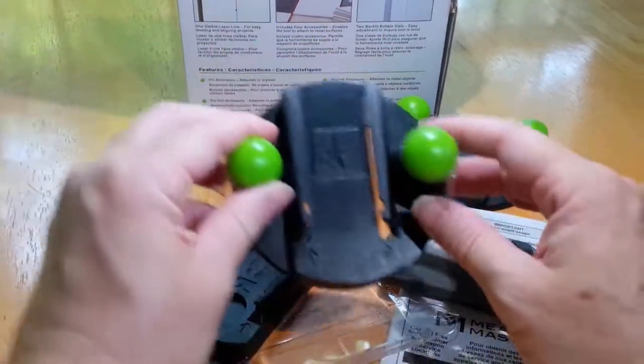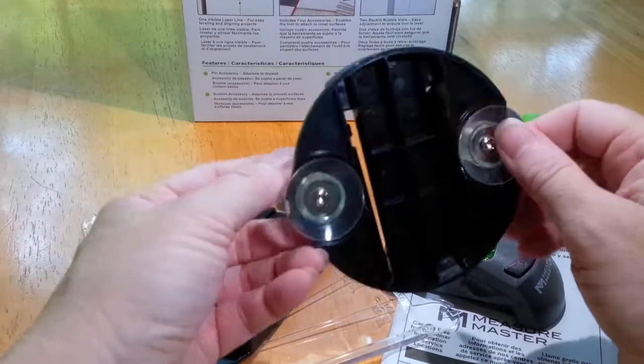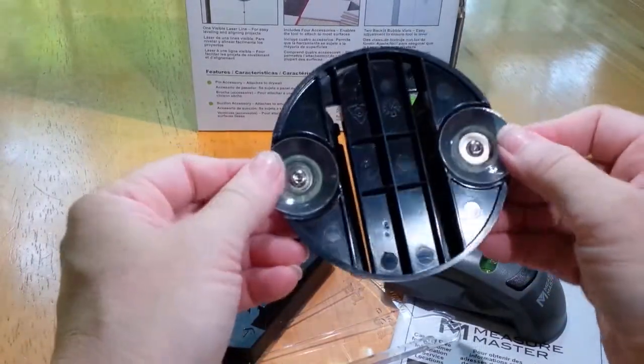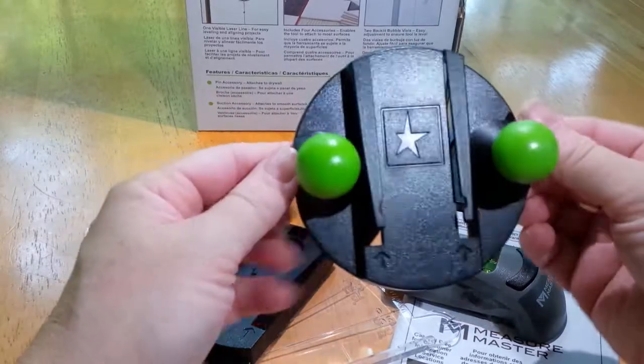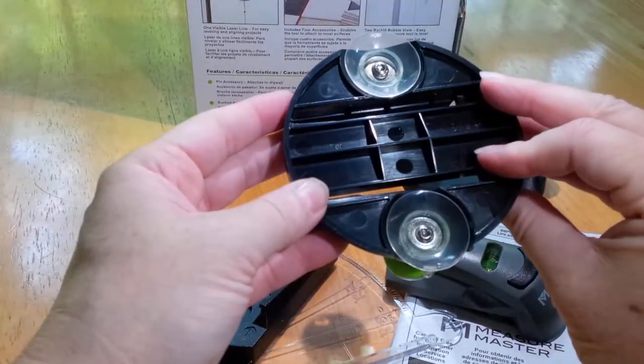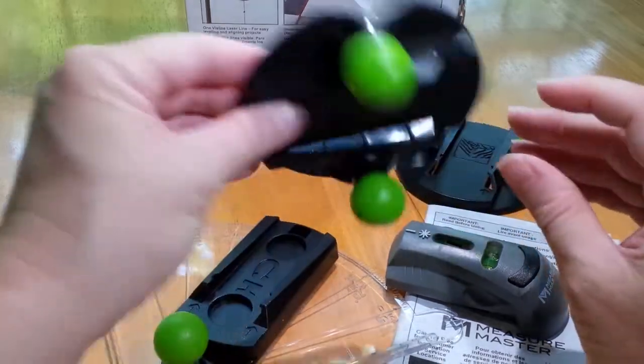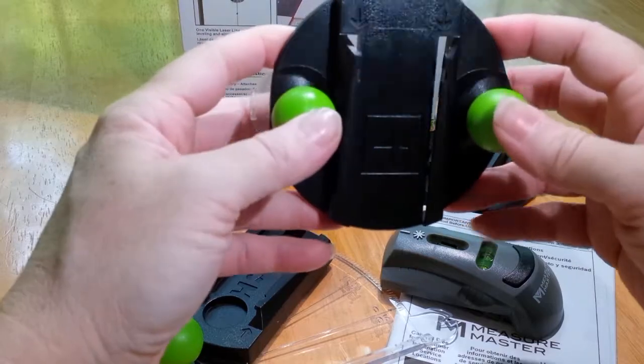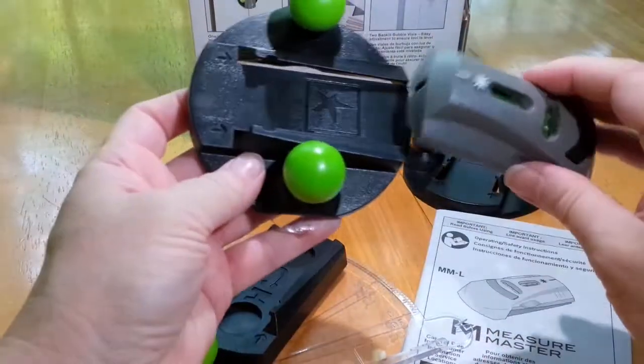This first one is for smooth surfaces. It's got very good suction cups, so it will adhere to mirrors, glass, refrigerators, things like that very well. You just put it up against the surface and press on those dots.